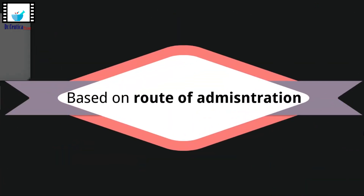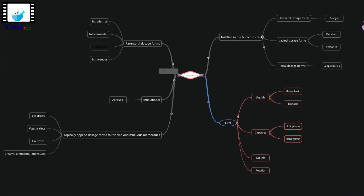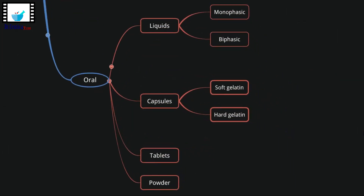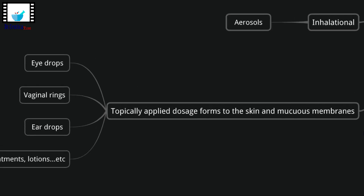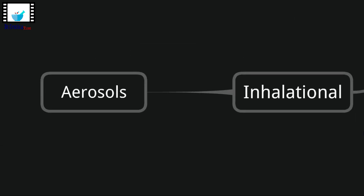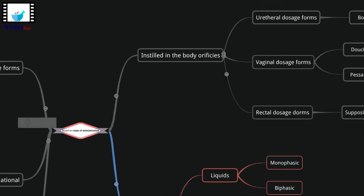We can also classify dosage forms according to their route of administration into five main classes, which are: oral dosage forms that are taken through the mouth; topically applied dosage forms onto the skin and mucous membranes; and inhalational dosage forms, which include anything instilled through the nasal and pulmonary route of administration.